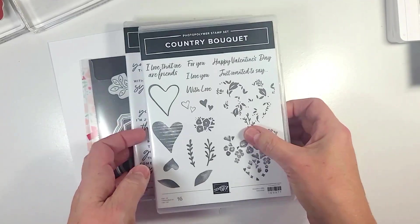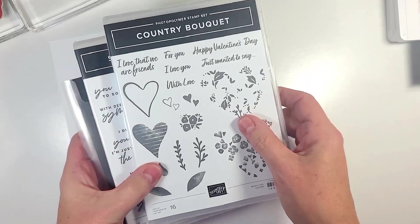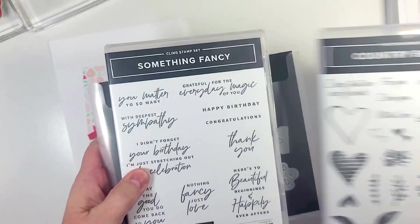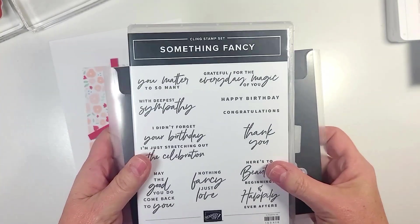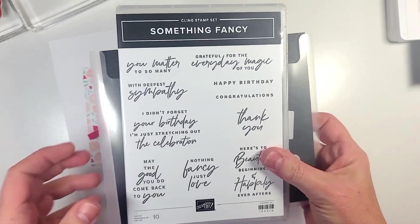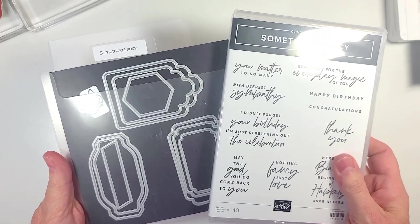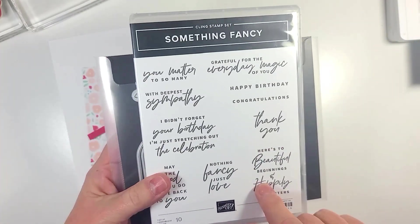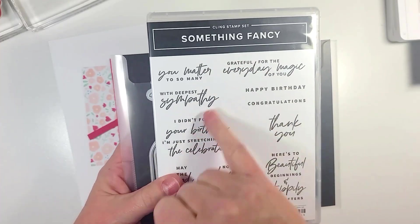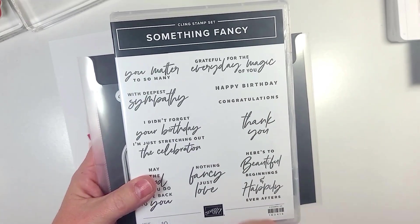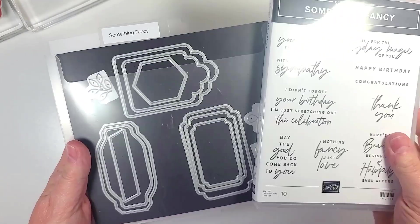To get started we are going to be using this little heart right here from the new Country Bouquet stamp set in the January through April mini catalog of 2023. We're also going to be using the brand new Something Fancy stamp set, using this sentiment here and the Happy Birthday that we're going to be posting on the inside.